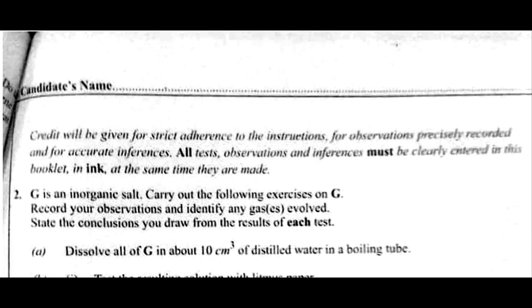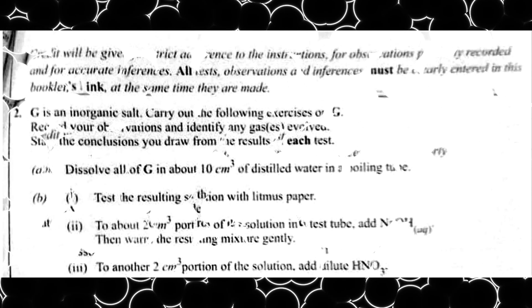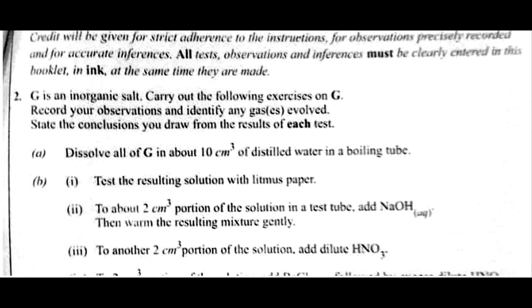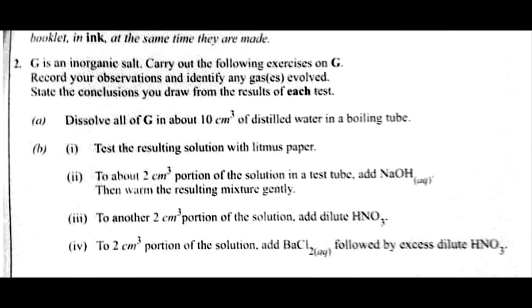Okay, so we are done with question 1. Now question 2, which is the qualitative analysis. We are told that credits will be given for strict adherence to the instructions, for observations precisely recorded and for accurate inferences. All test observations and inferences must be clearly entered in this booklet in ink at the same time they were made. Now I'm taking time to go through this correction so that those of you that are preparing for GCE will also have something to learn from. You are told that G is an inorganic salt. Carry out the following exercises on G. Record your observations and identify any gas or gases involved. State the conclusions you draw from the results of each test.